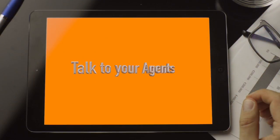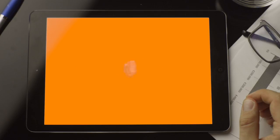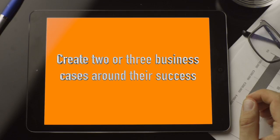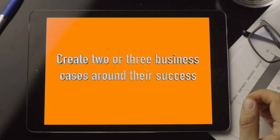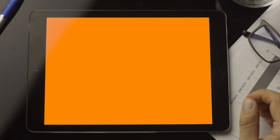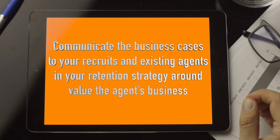If you want to improve your ability to link those differentiators to dollars, here are three simple steps. First, talk to your agents and find out who is using your differentiators successfully in their business. Second, create two or three business cases around those agent successes. And lastly, communicate the business cases to your recruits and existing agents in your retention strategy around driving value to the agent's business.